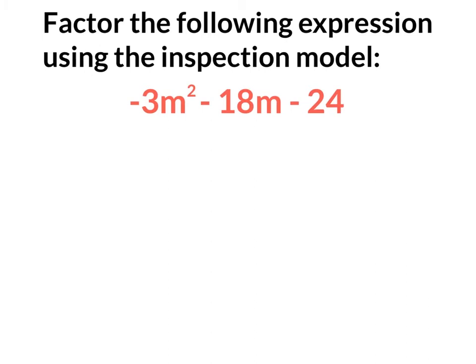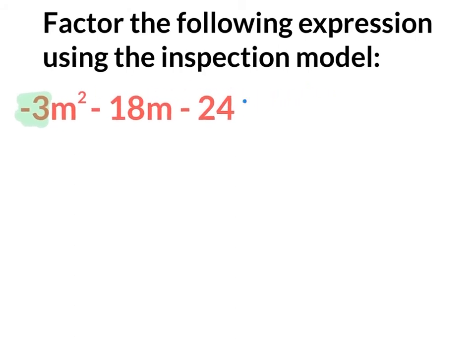The final example asks us to factor the following expression using the inspection model for the equation negative 3m squared minus 18m minus 24. We're going to start by noticing that there's a coefficient in front of m squared and it's negative in this example, so we're going to take that out as the greatest common factor. That gives us negative 3 times m squared plus 6m plus 8.